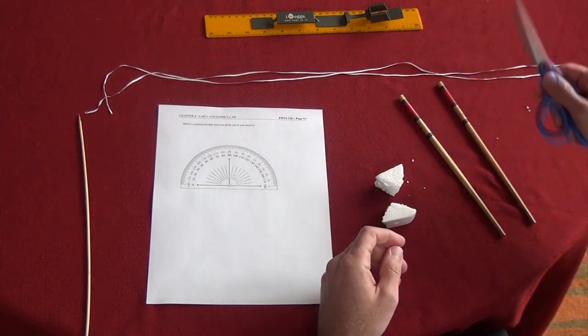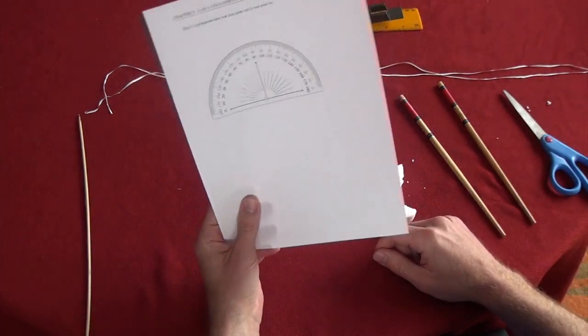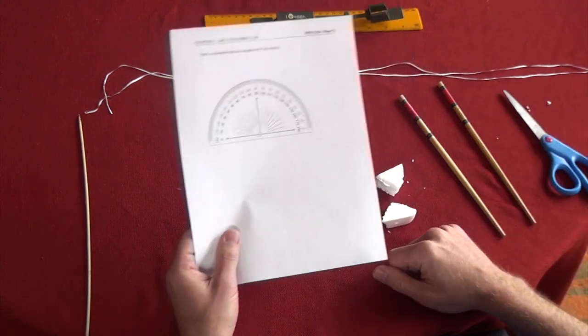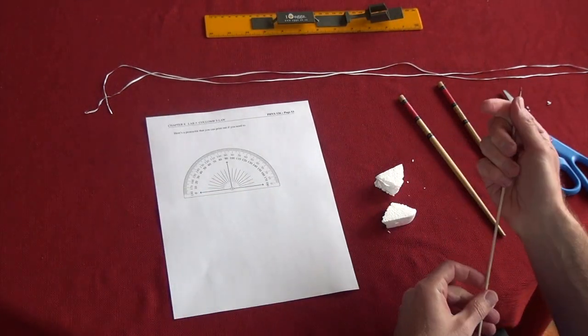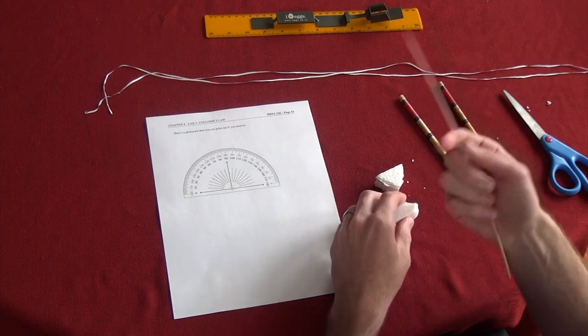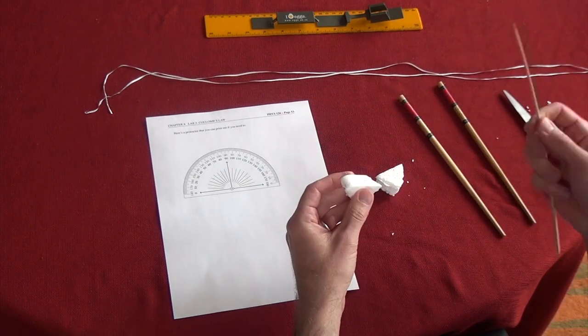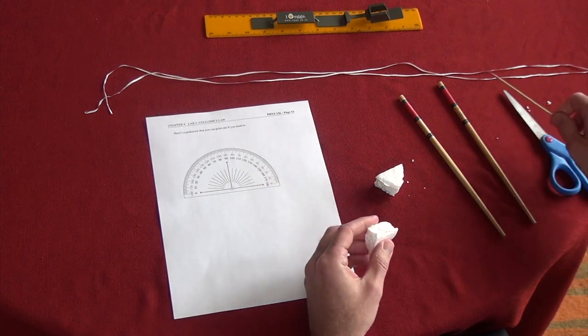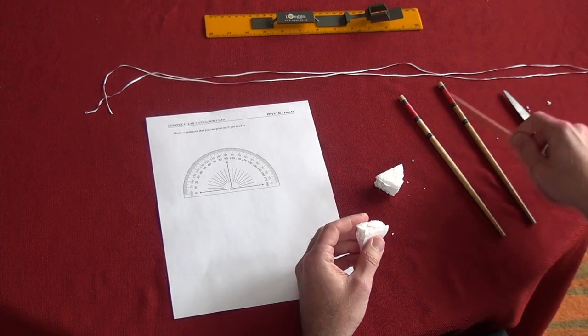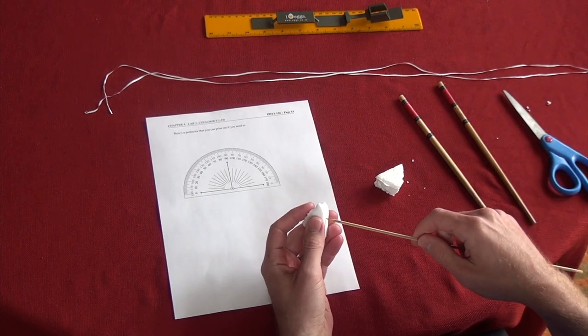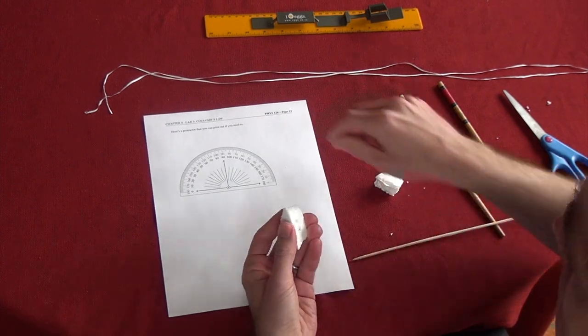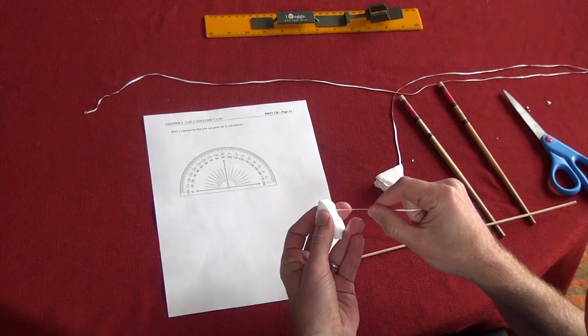Some scissors to cut the thread. I don't have a protractor, so I use the one that comes with the lab manual. I'm going to print and cut this out, and then I find that it's easiest to punch holes through the styrofoam with a little toothpick or something long and sharp. The first thing I want to do is thread these threads into the styrofoam. So I can just punch a little hole in it and take my thread through.